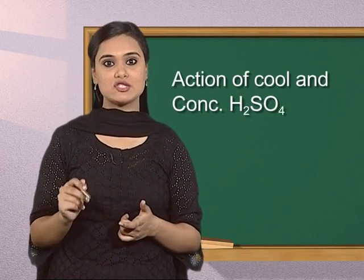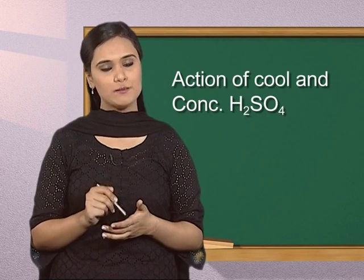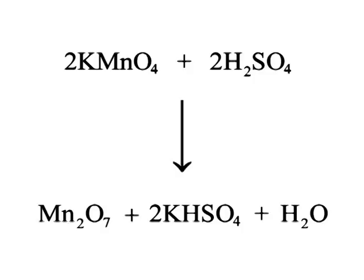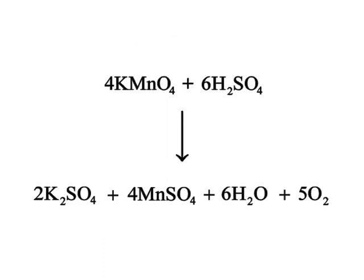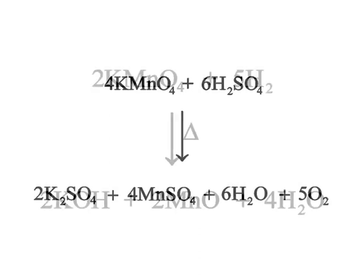When potassium permanganate reacts with cool and concentrated sulfuric acid, it forms manganese oxide, which decomposes to form manganese dioxide. When potassium permanganate reacts with hot and concentrated sulfuric acid, it forms potassium sulfate, manganese sulfate, water and oxygen gas.